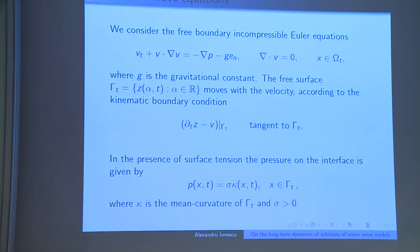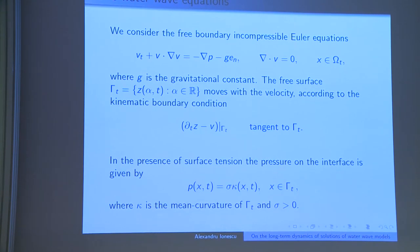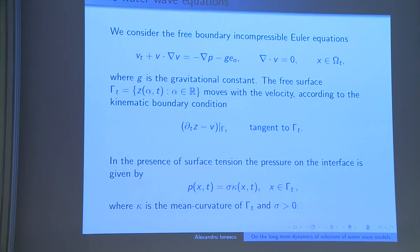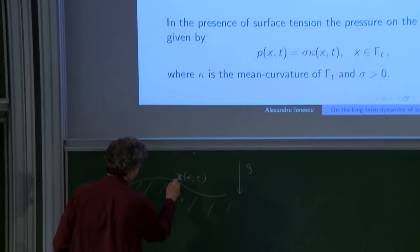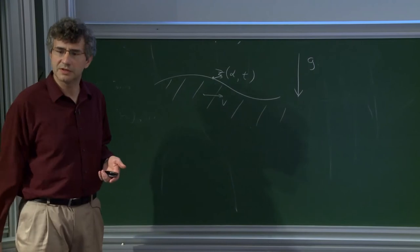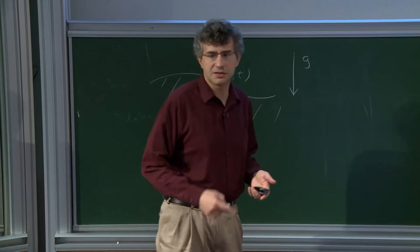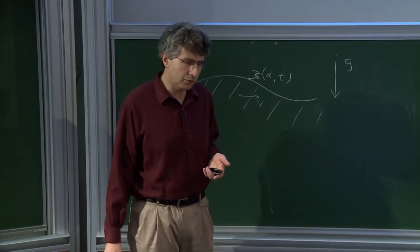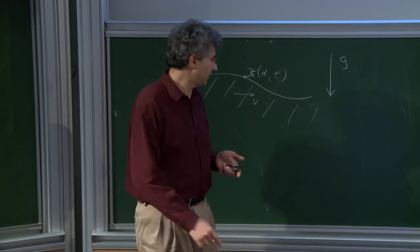There's also an equation for the moving interface. The interface itself is moving with the fluid, which says that D_T of Z — the particle on this interface — if the velocity of the particle points in some direction, then the interface wants to move in the same direction.